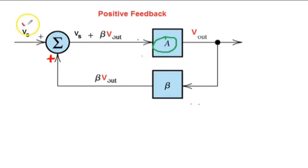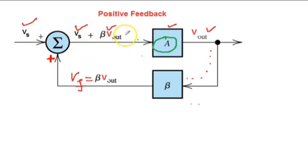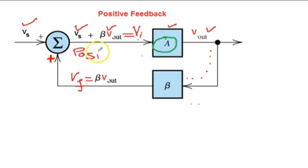This is the circuit for positive feedback. The amplifier output voltage comes back and passes through the beta network, becoming a proportion equal to beta times Vout — this is the feedback signal. The incoming signal is VS, and in positive feedback the two signals are added together. After addition it becomes Vi. So in positive feedback, the signal voltage and feedback voltage are added up.